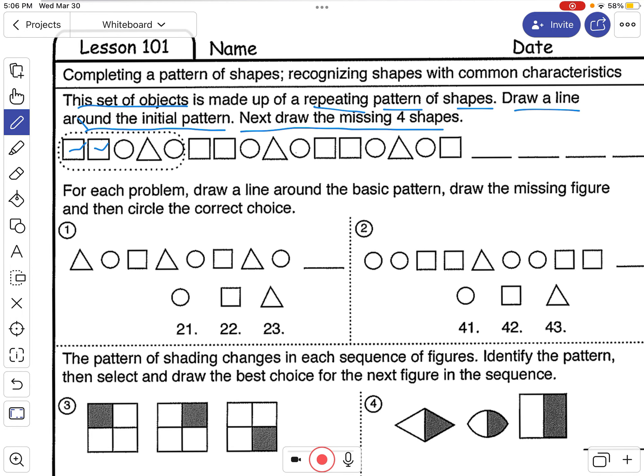So here we have square, square, circle, triangle, circle, and then it starts over again. Square, square, circle, triangle, circle.